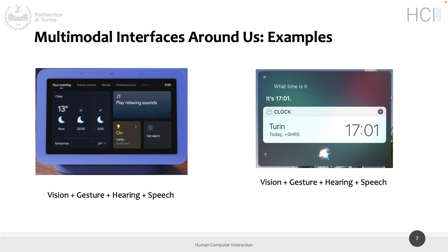Another example is Siri on MacOS. You have vision, gesture, hearing, and speech. You can click with the mouse — you need to move your hand — and you see the results. You also listen to the results because it speaks. You can also speak the wake word for Siri and ask 'what time is it?' to trigger the conversational assistant and generate the request. The request is something you both see on screen and listen to.